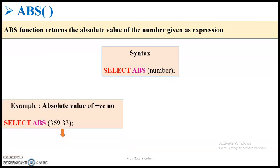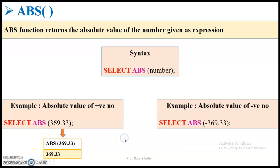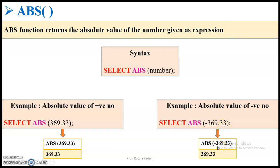Let us first try giving a positive number. If I give a positive number as the expression to the absolute function, it will return the positive number itself — the answer will be 369.33, the number itself because it is positive. But if I give a negative number to the absolute function, it will return the positive value. So the output of minus 369.33, a negative number, returns the positive number itself.